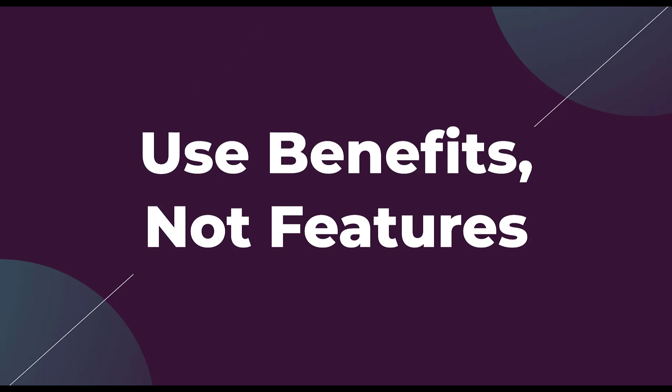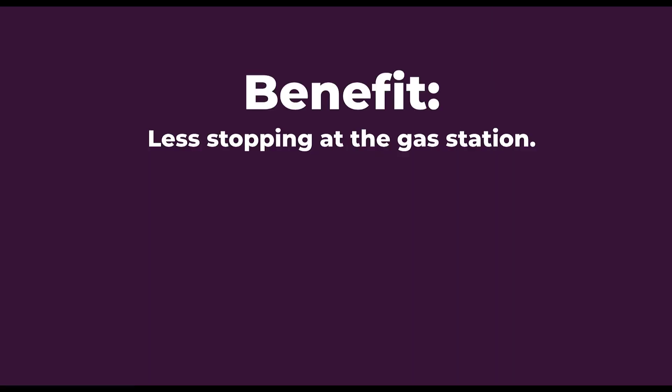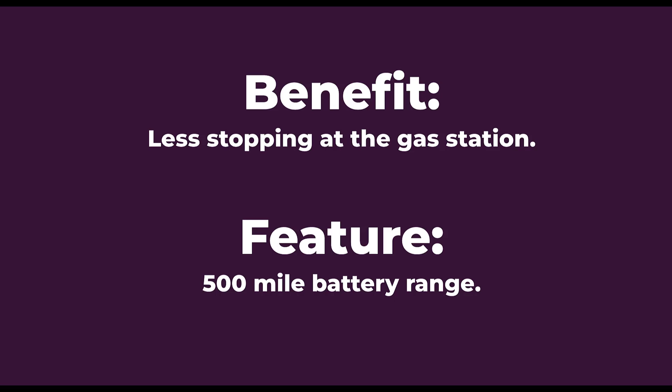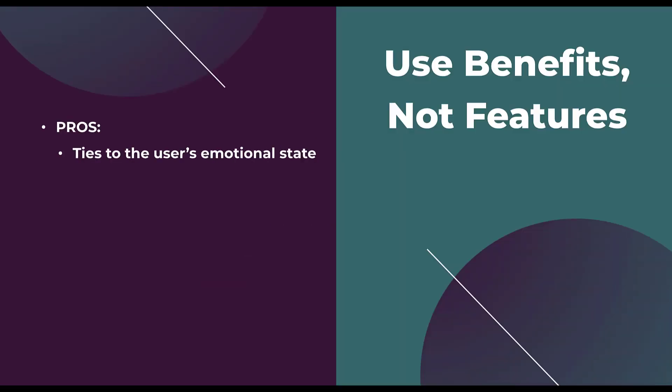The next strategy is about the language on your landing page — specifically, using benefits instead of features. For example, if you're selling electric or hybrid cars, a benefit statement would be that you stop at the gas station less. A feature statement would be that you have a 500-mile battery range. By using benefits, you tie the conversion action to the user's emotional state. There could be an emotional connection to stopping at the gas station less if that person really hates it.